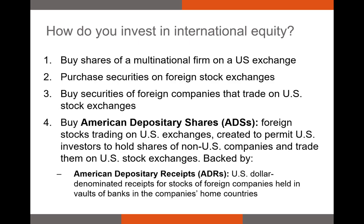U.S. banks typically buy up those shares trading on the international exchange, hold those shares in their vault, and issue shares on the NYSE or NASDAQ backed by those held shares. This allows U.S. investors to buy and sell shares of international firms like Alibaba or Heineken. Those shares trading on the NYSE are called ADRs, or American Depository Receipts. Each ADR is backed by international shares that trade on an international market, so one share of Alibaba on the NYSE would correspond to a certain number of shares on the Shanghai Stock Exchange.